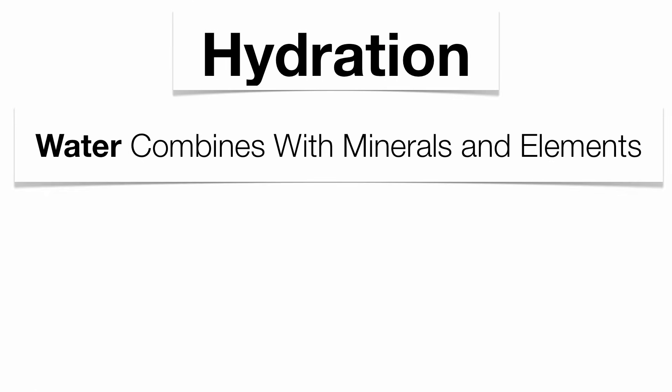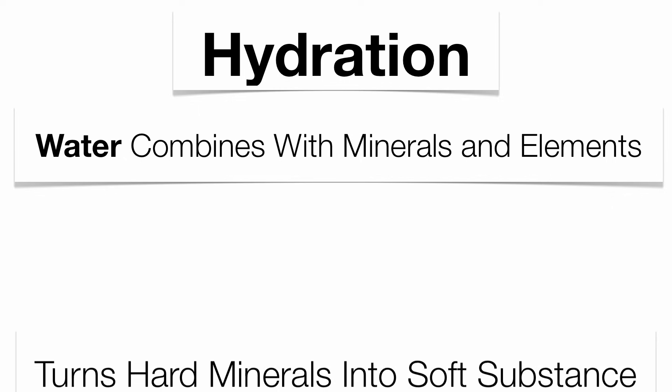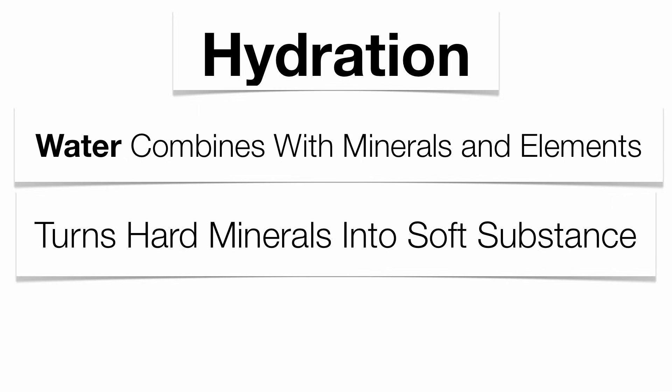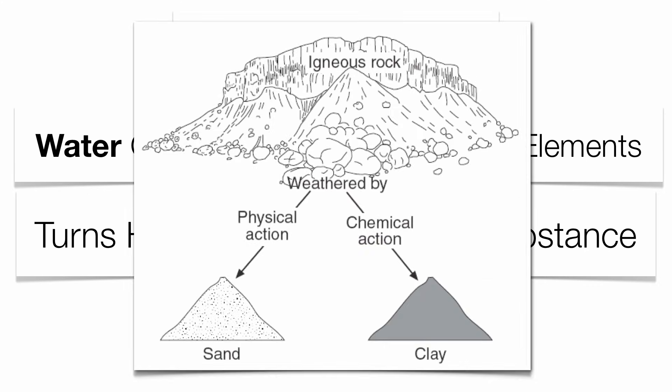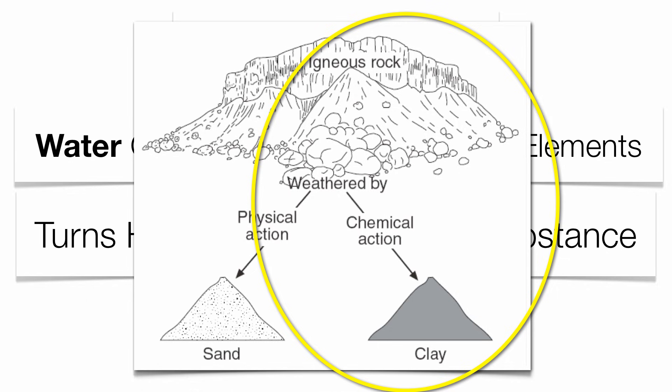The last type is what we call hydration. This is when water attacks the minerals and elements within a rock, turning very hard minerals into very soft substances. A good example is feldspar, which is attacked by water in the hydration process to create a very weak clay. That's demonstrated on the right-hand side of this Regents diagram.